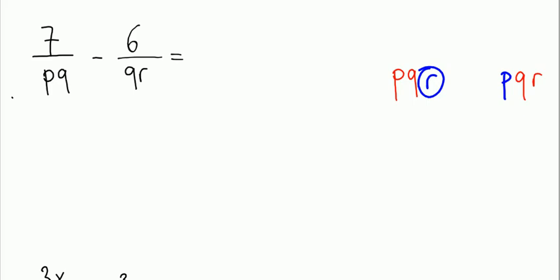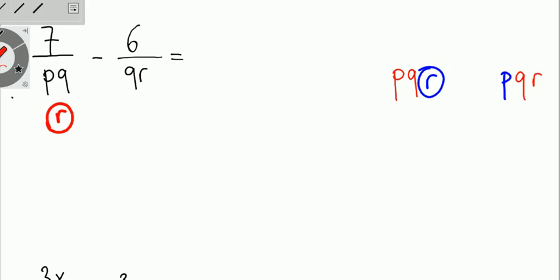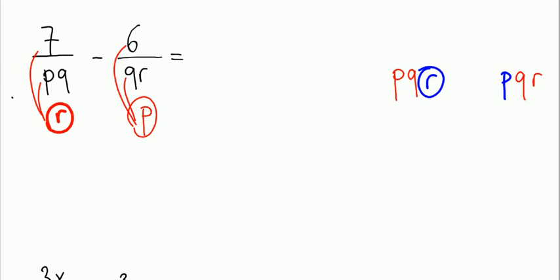As you can see, if we multiply the first fraction by R and the second denominator by P, we'll get the same denominator. So I'll multiply both numerator and denominator of the first fraction by R, and both numerator and denominator of the second fraction by P.